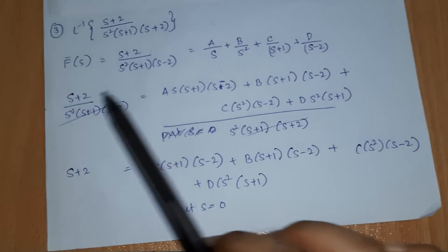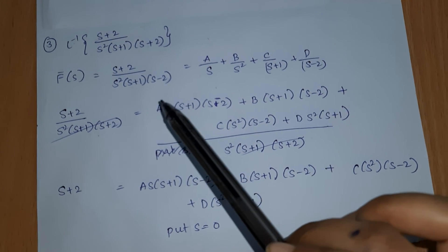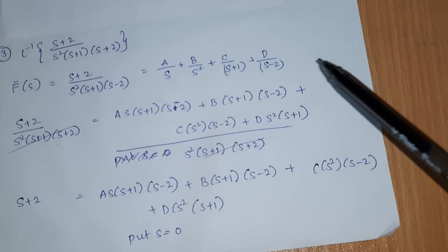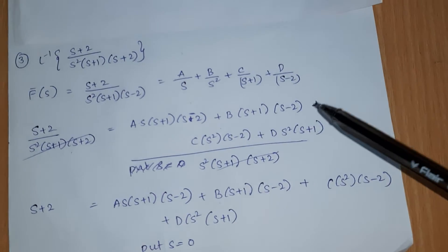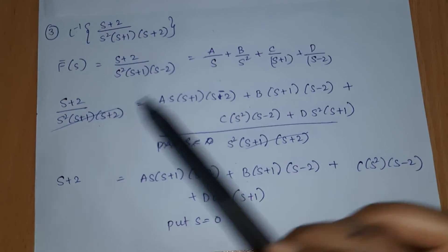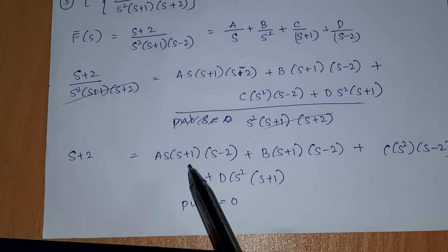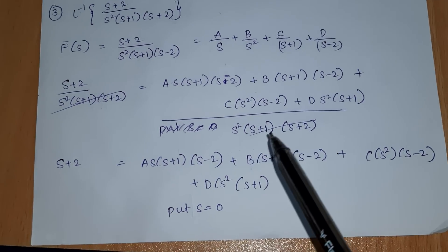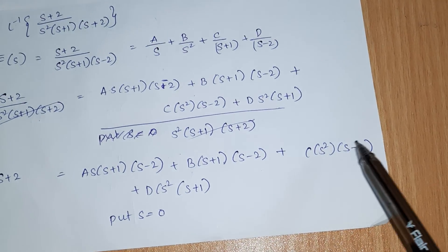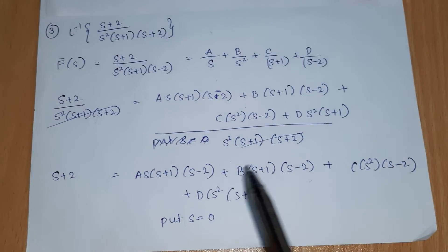Taking LCM, we get (s+2) divided by s squared times (s+1) times (s-2) equals A·s·(s+1)·(s-2) plus B·(s+1)·(s-2) plus C·s²·(s-2) plus D·s²·(s+1), all over the common denominator. Cancelling the denominators, we finally get: s+2 equals A·s·(s+1)·(s-2) plus B·(s+1)·(s-2) plus C·s²·(s-2) plus D·s²·(s+1). Now we have to find A, B, C, and D.